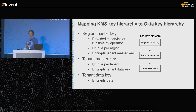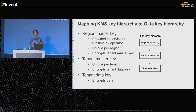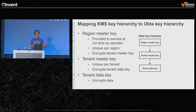Okta was already encrypting data before we moved to KMS, so we already had a key hierarchy in place. We used to have a model where we would provide keys to our servers at runtime — that key was the region master key. The region master key then encrypts a key per tenant, so every single tenant's data is encrypted under a separate master key hierarchy. That master key is then used to encrypt data keys that actually encrypt our data.